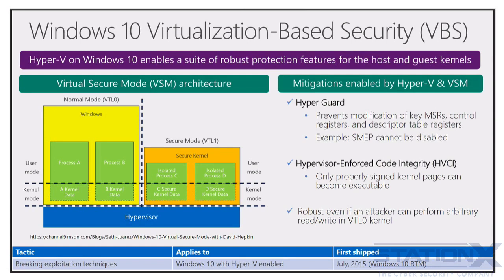Any alterations to these applications would be noticed by Device Guard and wouldn't allow them to run. This configurable code integrity is a nice feature. But what makes Device Guard really special is that it uses hardware technology and virtualization to isolate decision making functions from the rest of the operating system. The Type 1 hypervisor technology used to run virtual machines in Microsoft Hyper-V is used to isolate core Windows services into a virtualization based protected container.